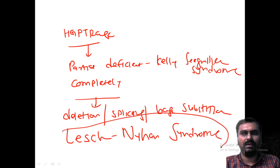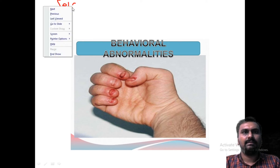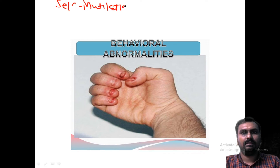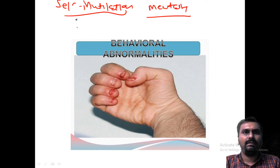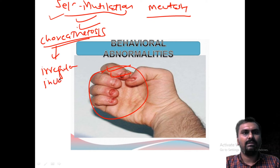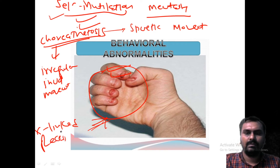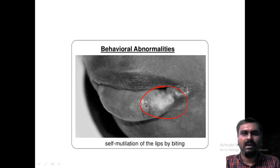It is very important to remember Lesch-Nyhan syndrome is due to deficiency of HGPRTase. The most important feature is self-mutilation — the person is mentally retarded and bites his own nails and lips. Other features include choreoathetosis, which means irregular involuntary muscle movements, and athetosis means spastic movements. This condition is X-linked recessive. You can see the bite of the lip and self-mutilation behavior in cases of Lesch-Nyhan syndrome.